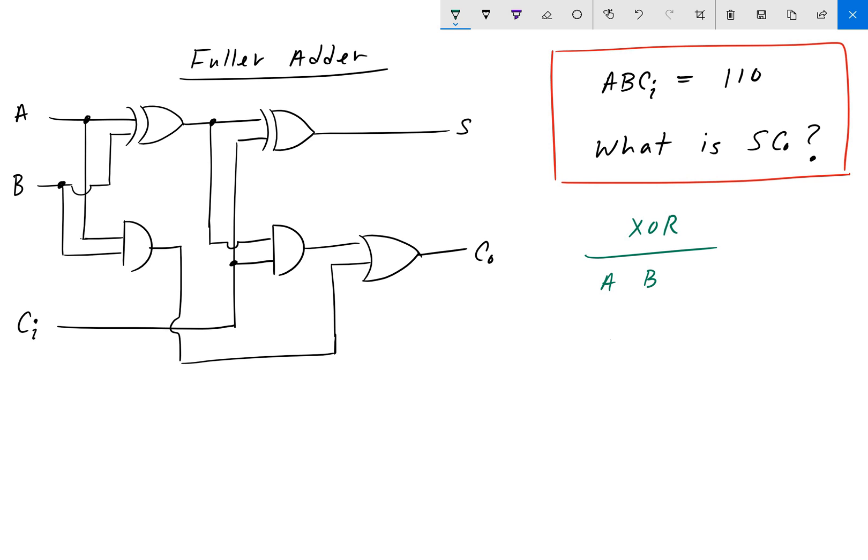We'll call it A, B, and Y. Like so, where this is 0, 0, 0, 1, 1, 0, 1, 1.